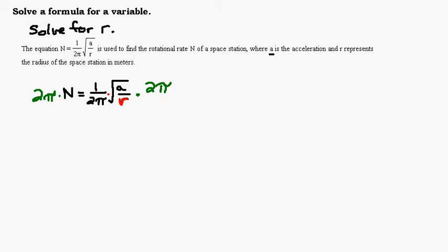Big key: what you do to one side, you have to do to the other, just like any other equation that you solve. So on the left-hand side, I have 2πn equals... Now on the right-hand side, since this is all multiplication, I can cancel these 2π's, and now I just have 1 times the square root of a over r, which is just the square root of a over r.